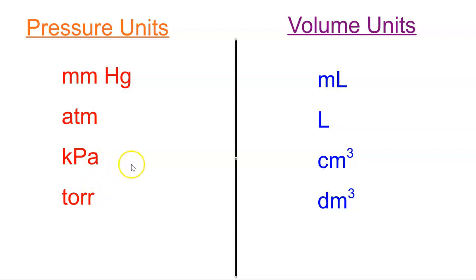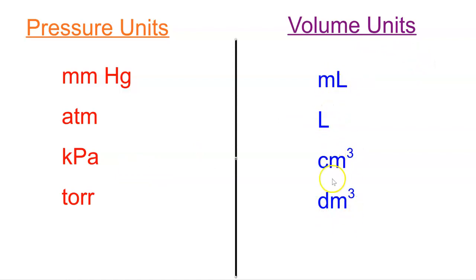Of course there are a couple other units of pressure — PSI, pounds per square inch — but you won't see that used here. I will focus on only these four for the most part. You also have these four units of volume: if a number has mL after it, it represents milliliters and volume. If it has L, it's liters. cm³ is centimeters cubed. And dm³ is decimeter cubed. All four of these represent volume, and those four represent units of pressure.